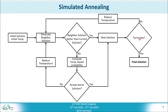If the termination criterion is not met, we reduce the temperature and generate a new neighbor solution. Now, if the neighbor solution is worse than the current solution, we compute a temperature-based probability function. And according to this probability, we can accept the worse solution.